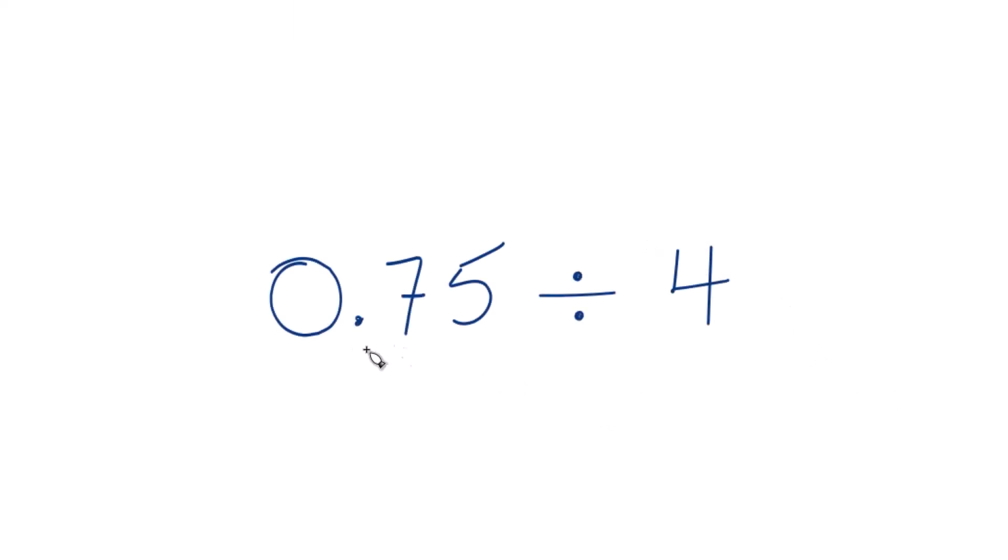All right, if you want to divide 0.75 by 4, here's how you can do that. So we could think of this as 0.75 over 4. That would be the same thing.